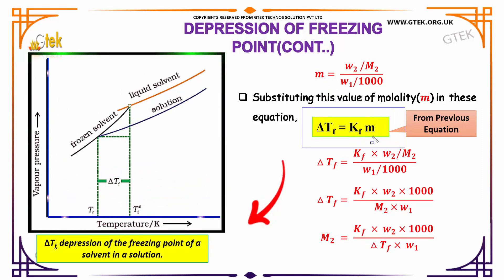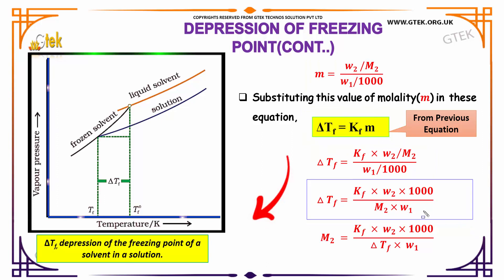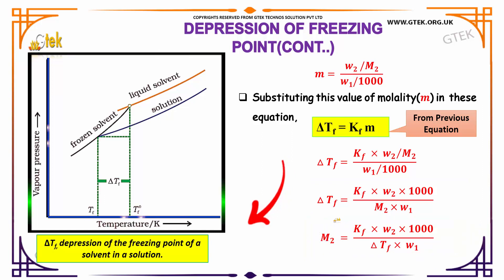Since ΔTf = Kf × m, substituting the expression for molality gives ΔTf = Kf × (w₂ × 1000) / (M₂ × w₁). Solving for M₂, we get the final equation: M₂ = (Kf × w₂ × 1000) / (ΔTf × w₁). This is the final equation used to determine the molar mass of the solute.